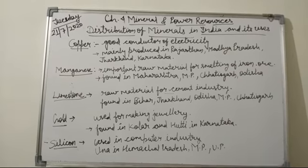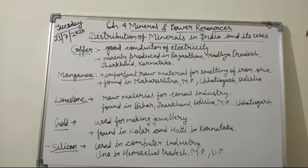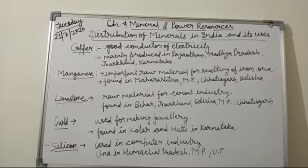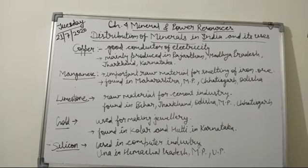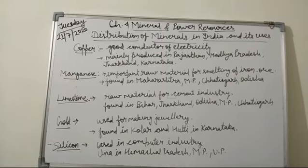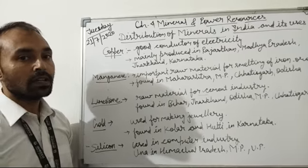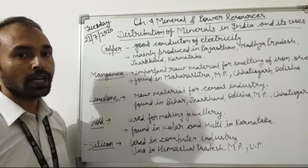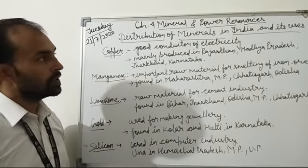The last mineral is silicon, another important mineral used in the computer industry. It is obtained from quartz, which is mainly found near Una in Himachal Pradesh and in Madhya Pradesh and Uttar Pradesh. This concludes our lesson on the distribution of minerals in India and how they are used for different purposes.